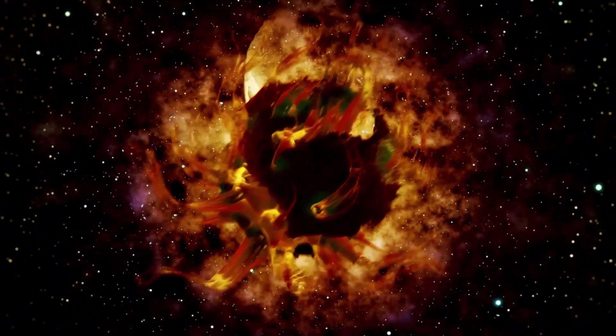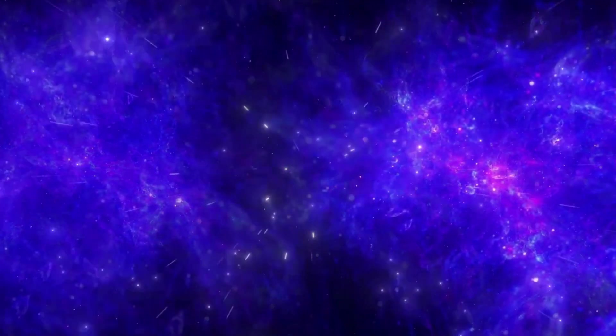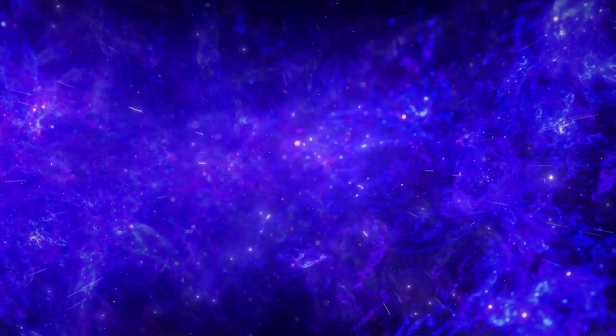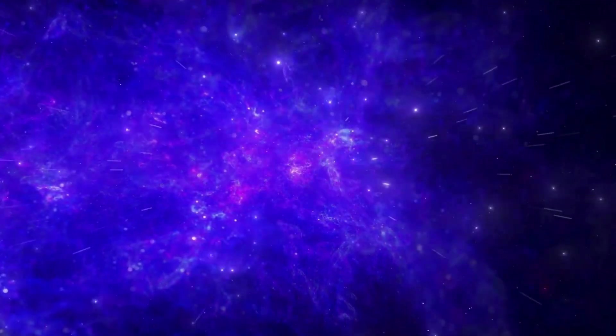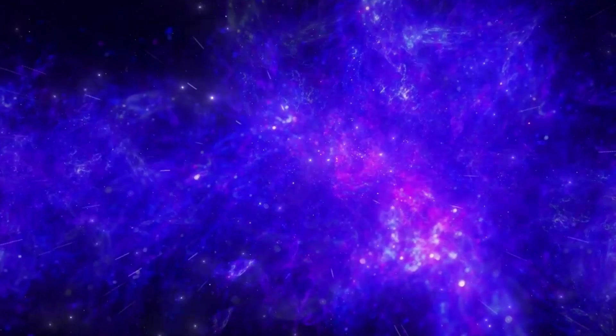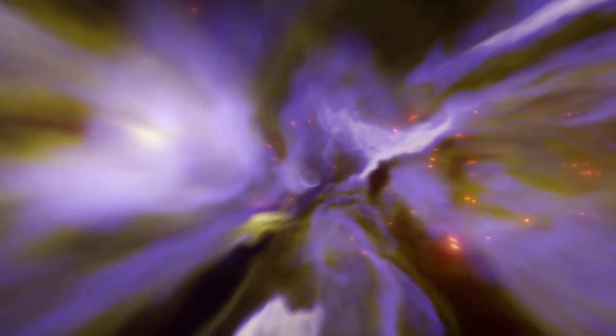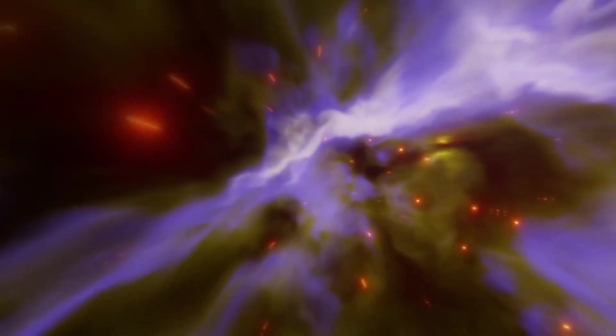Unlike most stars, Betelgeuse changes apparently over time because of its nearness to our system. Named a semi-regular variable star, its brilliance fluctuates consistently, moving toward a potential great breakdown in a supernova blast.